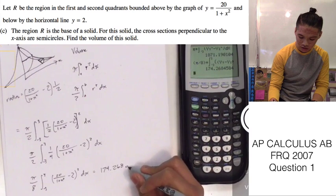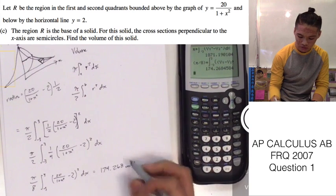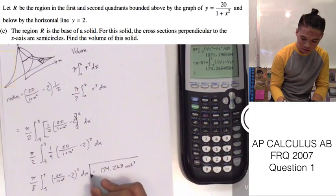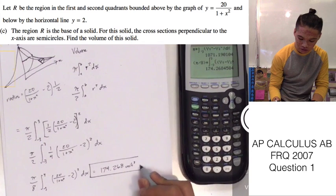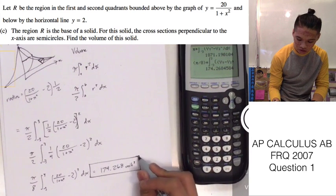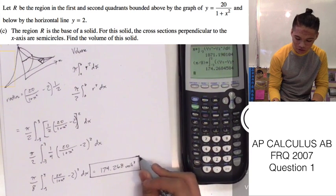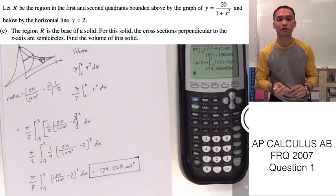174.268 units cubed. And that is the volume of this solid here. And now, we have completed all of this question one from the 2007 AP Calculus FRQ. Thank you.